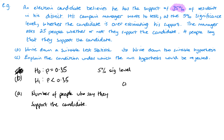Part C is the final part, and that's where the four people come in. The question asks us to explain the condition under which the null hypothesis would be rejected. It would be rejected if the probability of four or fewer people saying they support the candidate is less than 5%.